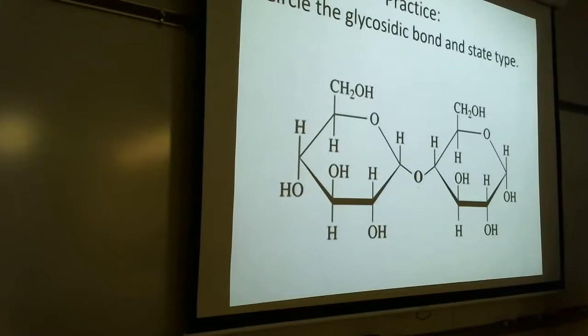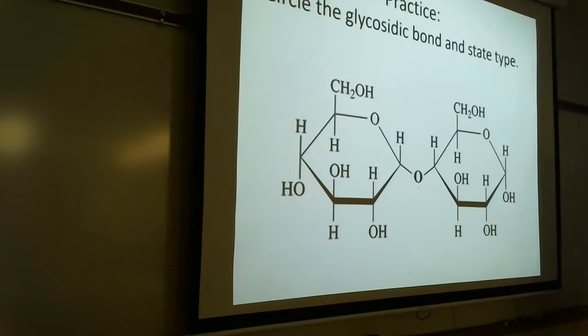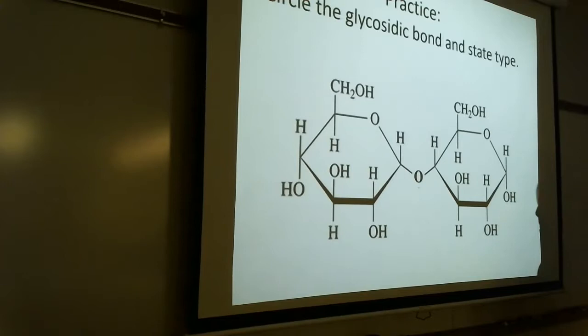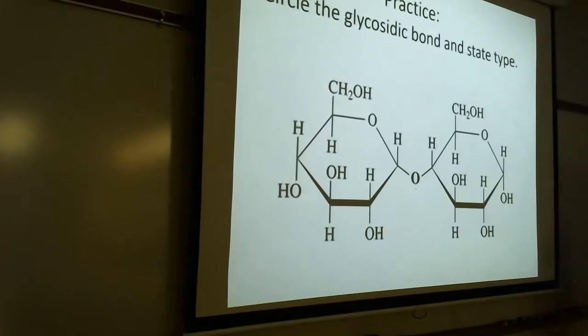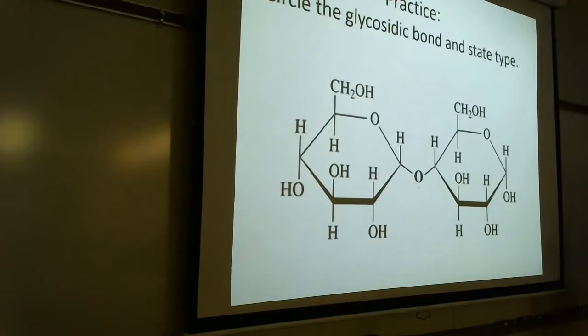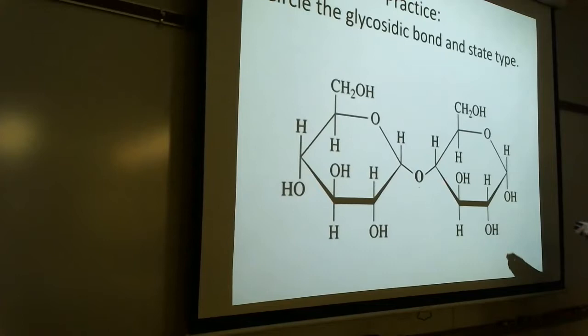For instance, if this were on a test, I'd say circle the glycosidic bond and state the type. So where would you circle? This whole thing right here, including those two carbons. So you'd circle right there. And is it what kind of type? Alpha. And then what numbers? Alpha, 1, 4. I'm going to show you ones that are not 1, 4 in a minute. That's why I want to specify. This whole thing gets circled and you would say it's alpha, 1, 4.